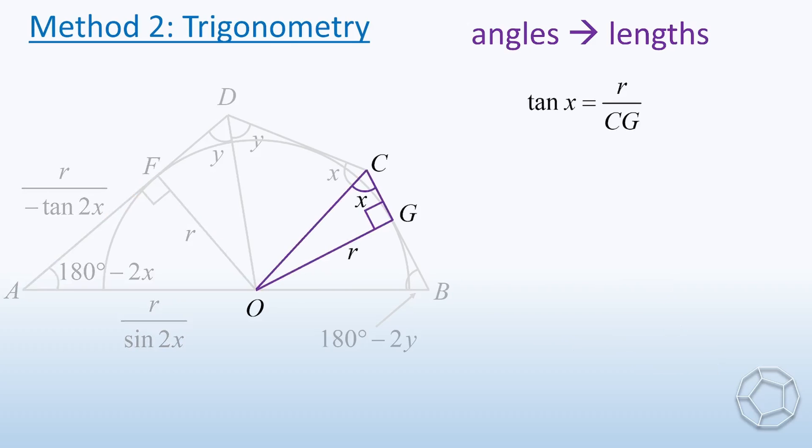Now we look at this purple triangle. For the side CG, it equals R over tan(X). So why do we need these three sides? Let's add up AF and CG, and you will see a nice result.